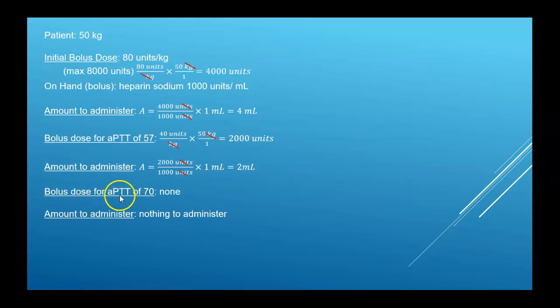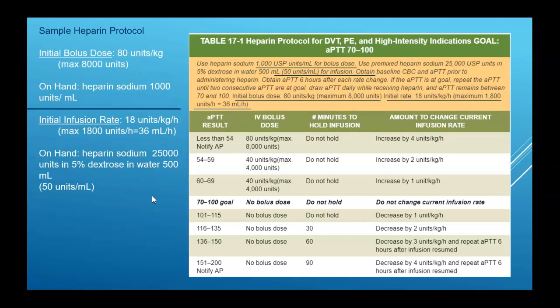For an APTT of 70, the protocol shows that 70 to 100 is the goal range, so no bolus is needed.